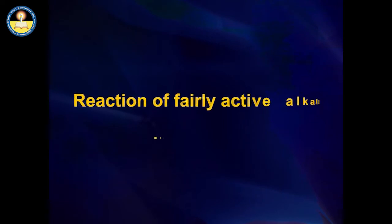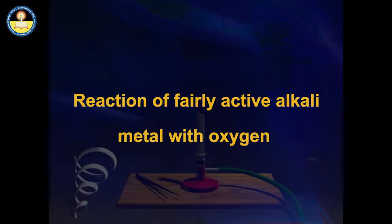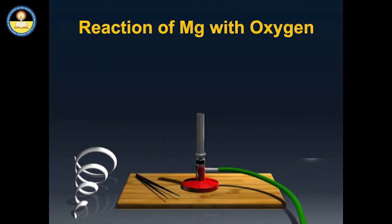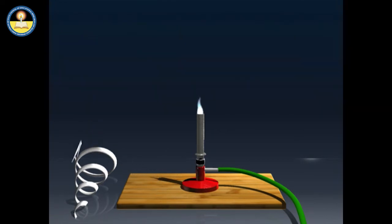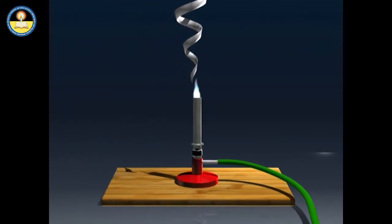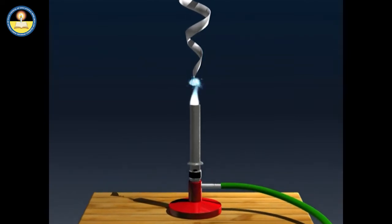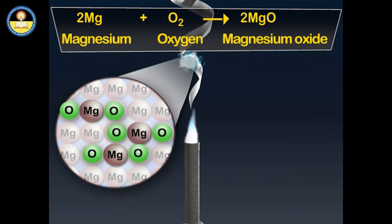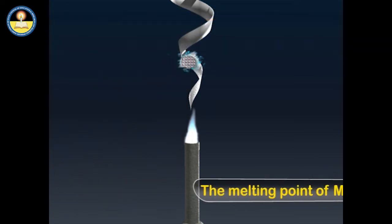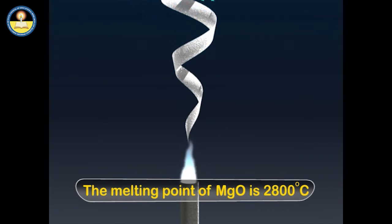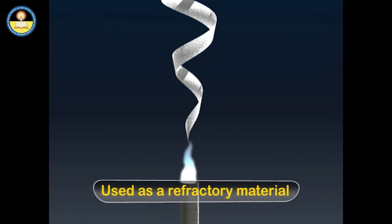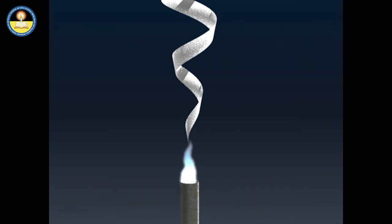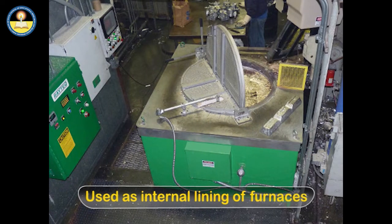Magnesium reacts with oxygen to form magnesium oxide. Magnesium wire burns in oxygen with a white dazzling light. This reaction occurs at high temperature and in the excess of oxygen. Magnesium oxide formed is quite stable and is a basic oxide. The melting point of magnesium oxide is 2800°C; therefore, it is used as a refractory material and as internal lining of furnaces where heating is done to very high temperatures.